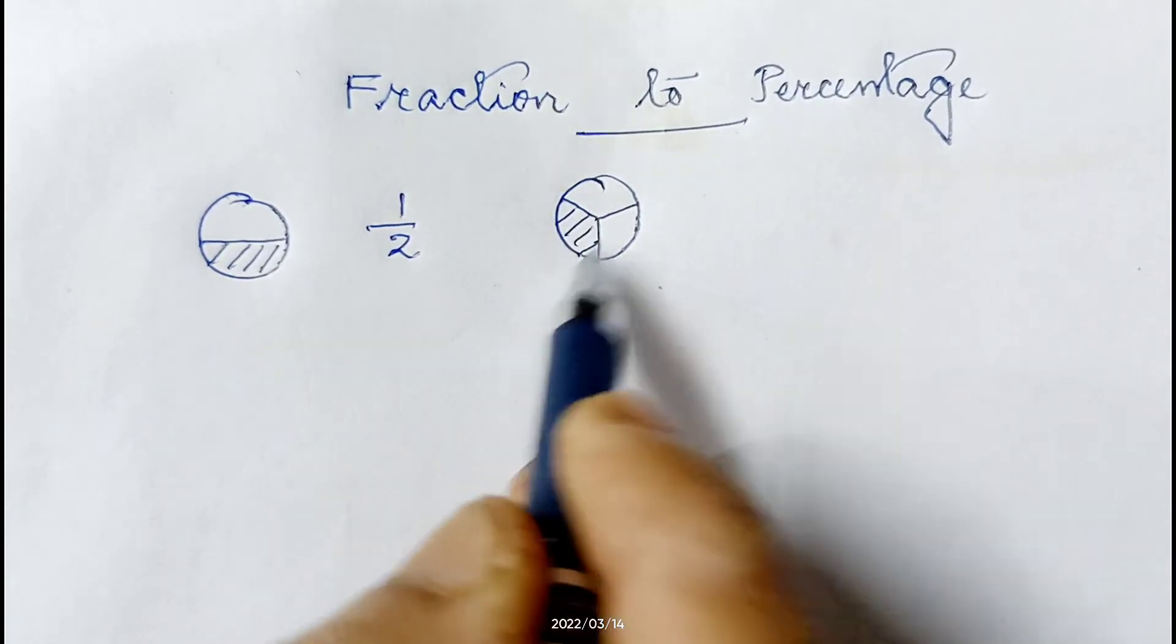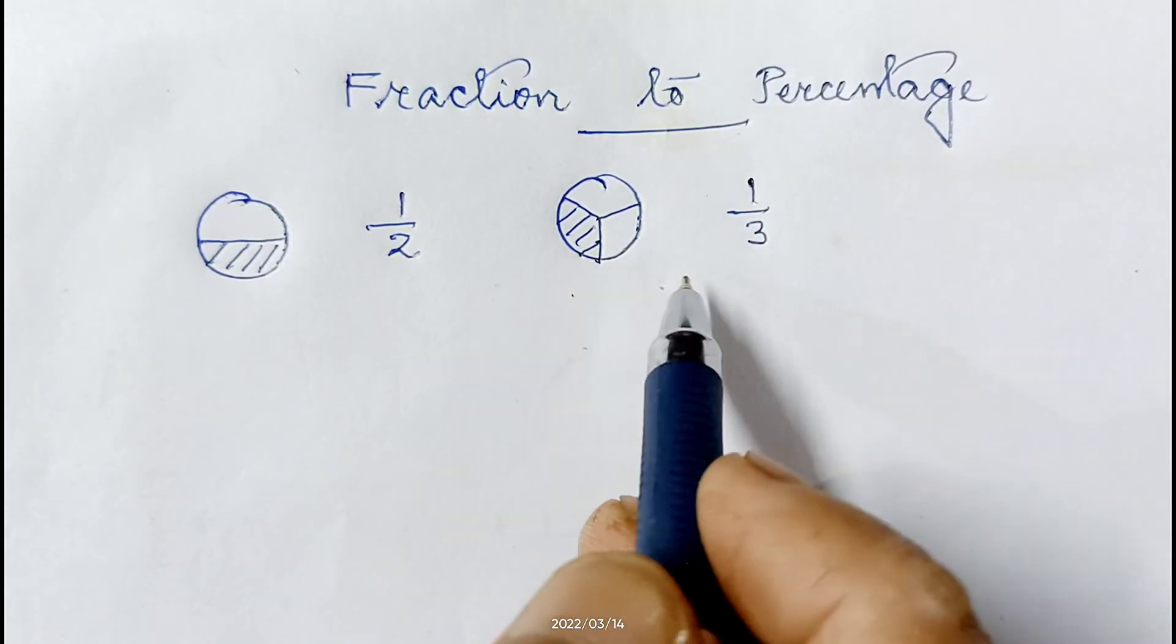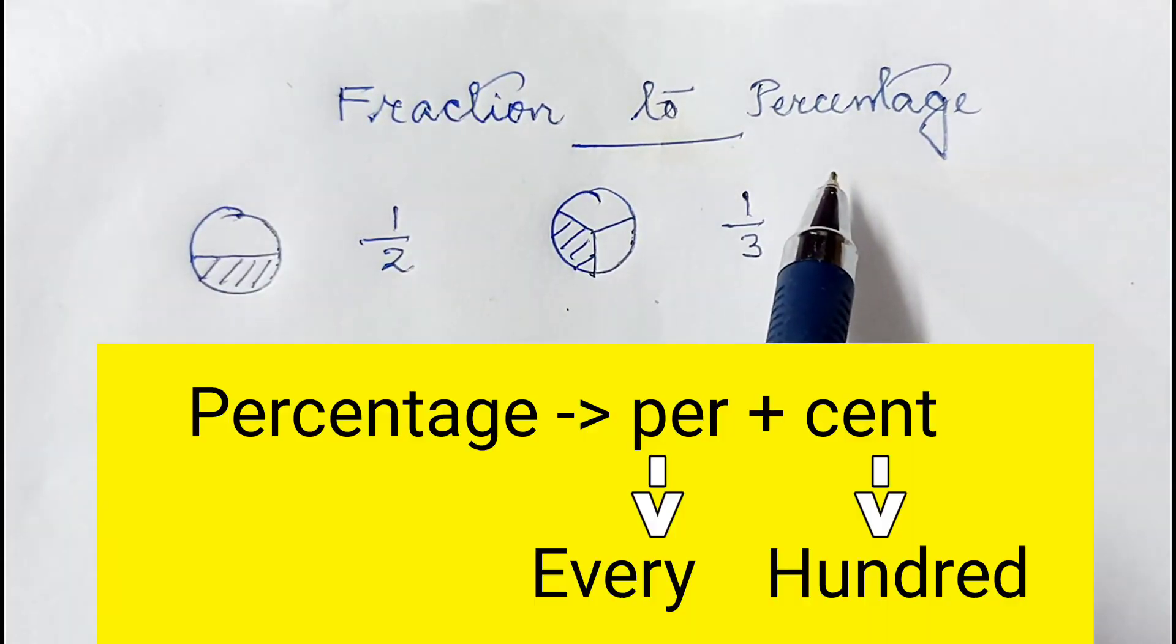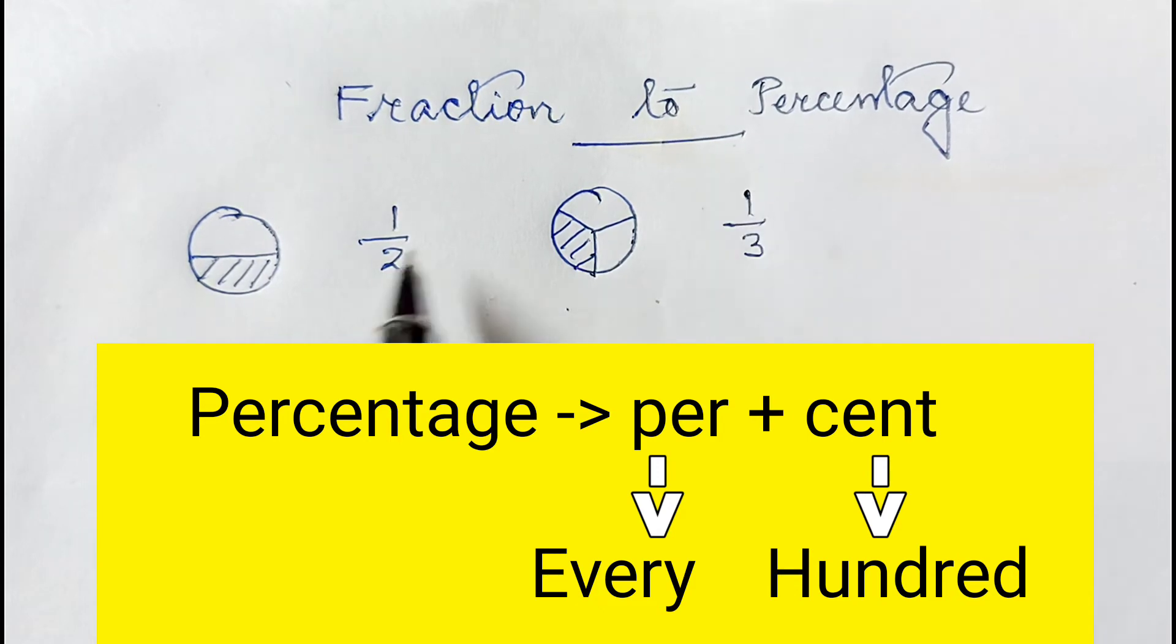So these are all fractions and percentage means out of 100. Suppose if I say 20 percent, that means 20 out of 100. Now how to convert these fractions to percentage? The very simple trick is just multiply this fraction by 100.